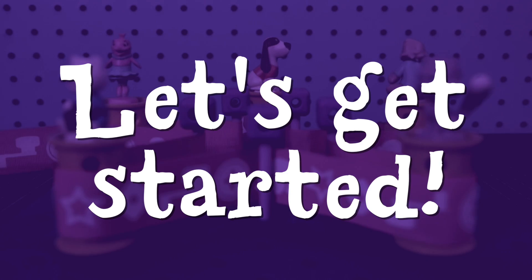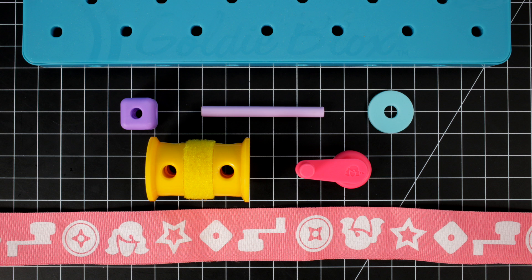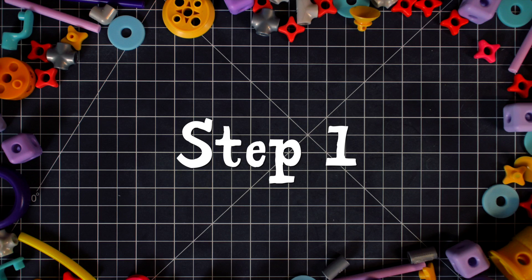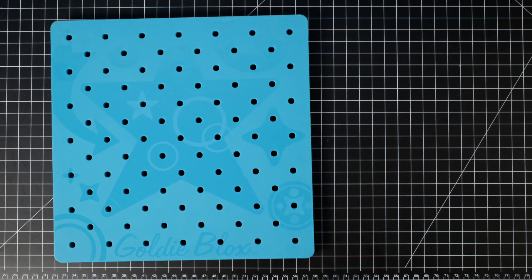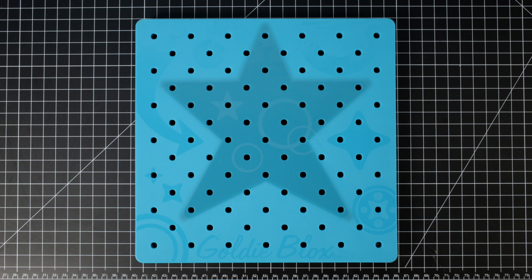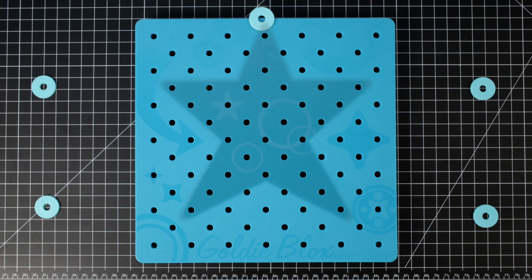Let's get started. Make sure you have everything - you can pause the video anytime if you need to catch up. Step one: Take a look at your pegboard. Do you see the star design? Take five washers and place them on each point of the star.